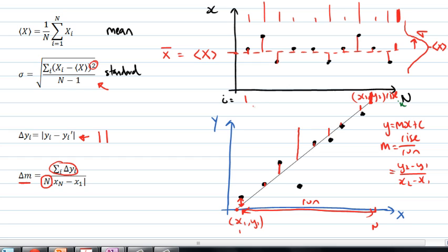So, if I take that rise and divide by that run, I get this little amount of slope.